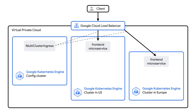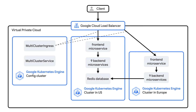By default, this request is routed to the cluster geographically closest to you for lower latency. The request is then processed and handled by the rest of the back-end microservices in that cluster that make up all the other functionality you'd expect in an e-commerce app.